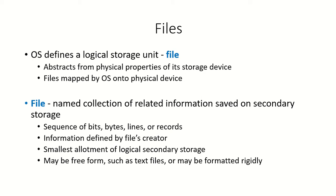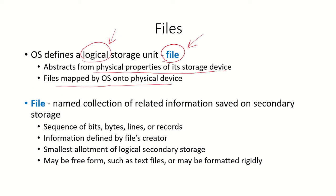The operating system defines a logical unit of storage called a file. We are not talking about the actual physical storage but the logical storage. How a file will actually be stored on a storage device is different from what a file is. The physical properties of its storage on any device are abstracted — we don't need to know how or where it is being stored. These files will be mapped by the operating system to some physical device where they will actually be stored.